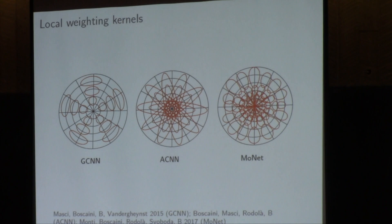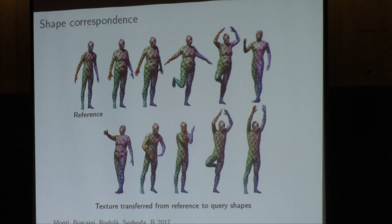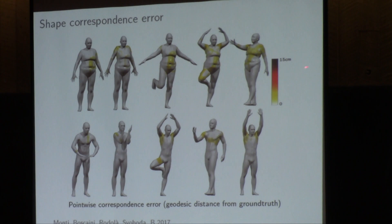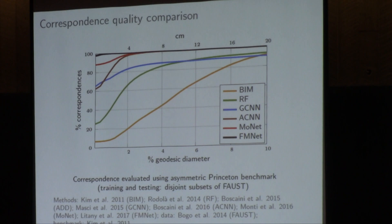Here are some examples of how these learned weights look. These are learnable weights optimized together with filter coefficients. One computer graphics application is texture transfer: given a reference shape with a checkerboard texture, the neural network finds correspondences and transfers the texture — almost perfect with only minor distortions. Another evaluation shows deviation from ground truth correspondence, measuring how many correspondences fall within certain tolerance radius. Results are almost perfect, which is a standard evaluation method in computer graphics.